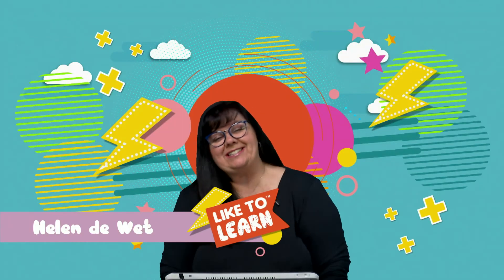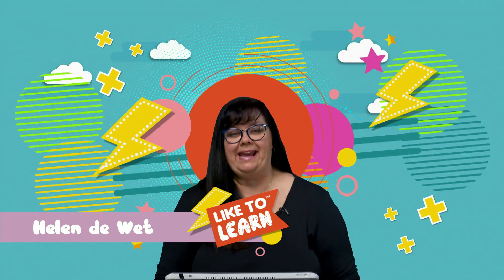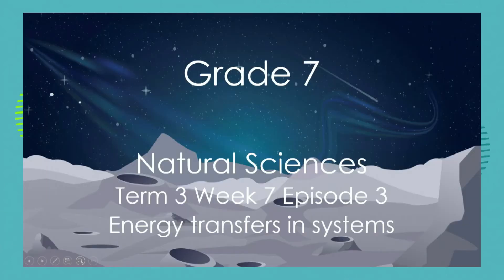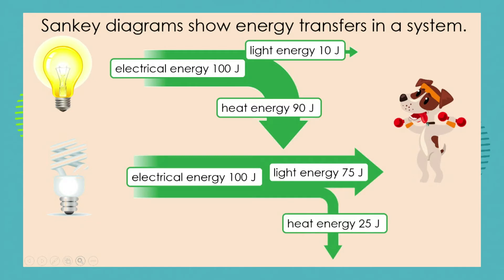It's time for Natural Sciences. Great Sevens, I'm Helen and today we continue to look at energy transfers in systems. In previous lessons we have identified that in any system there is an amount of input energy and there is output energy. We've also learnt that our input energy must equal our output energy.